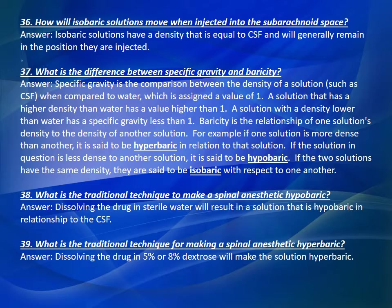Question Number 37: What is the difference between specific gravity and baricity? Answer: Specific gravity is the comparison between the density of a solution, such as CSF, when compared to water, which has a value of 1. A solution with a higher density than water has a value higher than 1; a solution with lower density has a specific gravity less than 1. Baricity is the relationship of one solution's density to the density of another solution. If one solution is more dense than another, it is said to be hyperbaric in relation to that solution. If the solution is less dense, it is said to be hypobaric. If the two solutions have the same density, they are said to be isobaric with respect to one another.